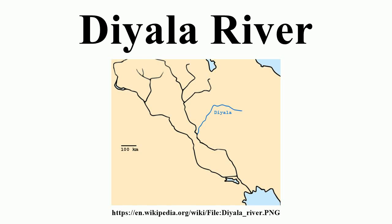The Diyala River is a tributary of the Tigris that originates in Iran as the Surwan River, then runs mainly through eastern Iraq. It covers a total distance of 445 km. It rises near Hamadan in the Zagros Mountains of Iran.